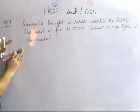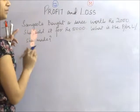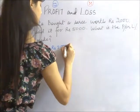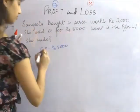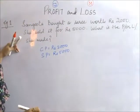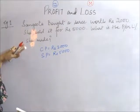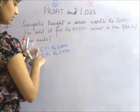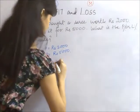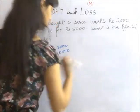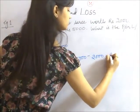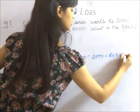Let us see this example. Sangeeta bought a saree worth Rs. 2000, where CP becomes Rs. 2000. She sold it for Rs. 5000. The selling price becomes 5000. What is the profit or loss percentage that she made? Since SP is more than CP, she booked the profit which would be calculated as SP minus CP which would come out to be 5000 minus 2000 that is Rs. 3000.